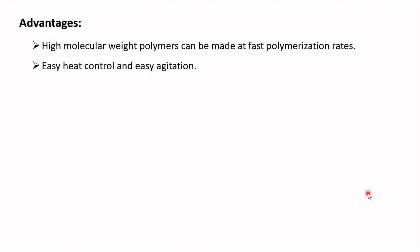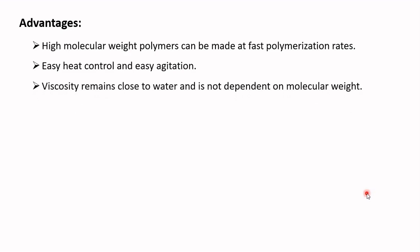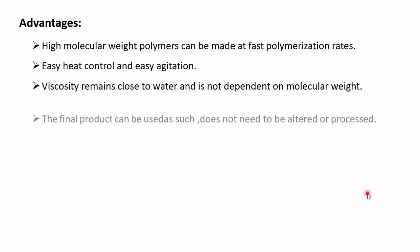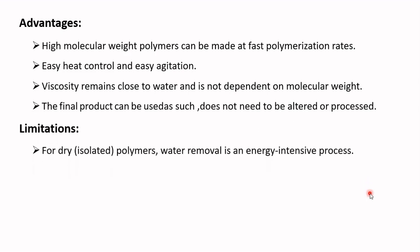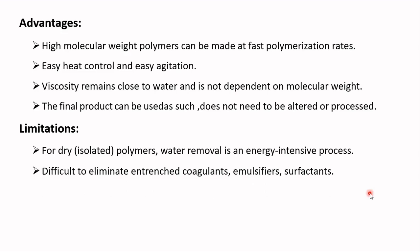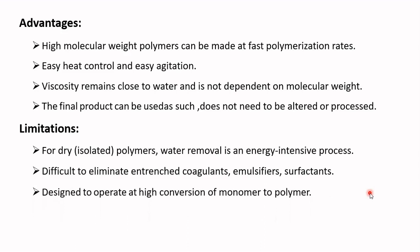Further advantages of emulsion polymerization include: easy heat control and easy agitation; viscosity remains close to that of water and is not dependent on molecular weight; and the final product can be used as-is without further processing. The limitations include: water removal is energy-intensive for dry or isolated polymers; it is difficult to eliminate entrenched coagulants, emulsifiers, and surfactants; and operating at high monomer-to-polymer conversion can result in significant chain transfer to polymer.